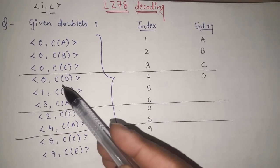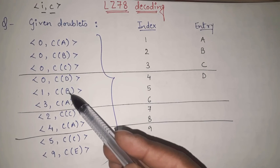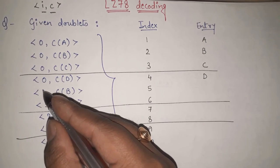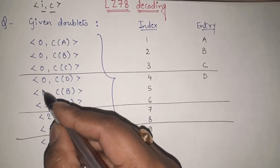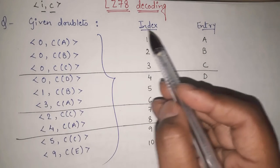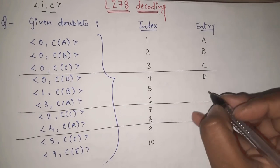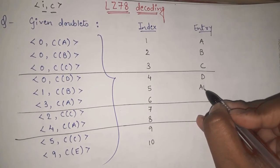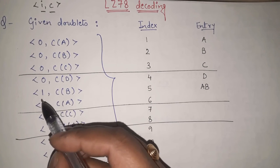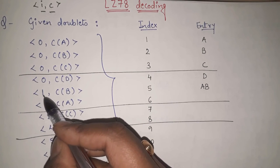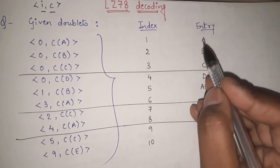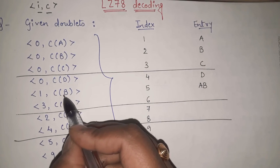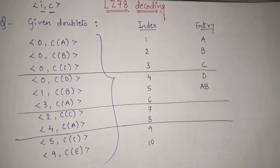Now 1 and the codeword of B — that means B will be there but it will follow what. Here the index given is 1, so we have to first check in the index of 1. In index 1 I am having A, that means A will be there and then we will append B into it. First of all I will check the given index here is 1, so in index 1 we are having A. A will be written here and the codeword given is B, so here the entry becomes AB.